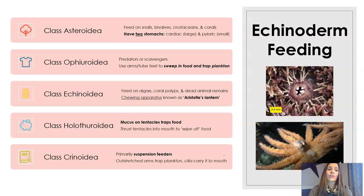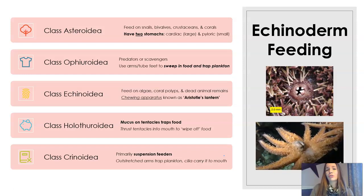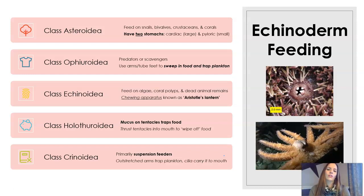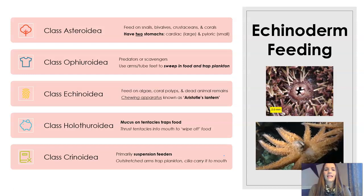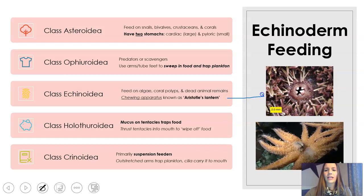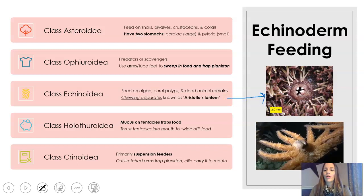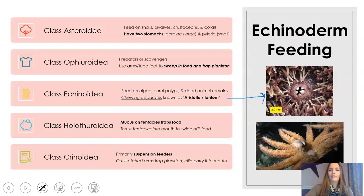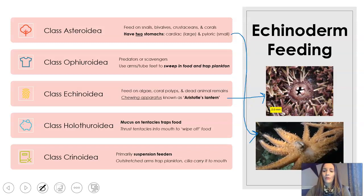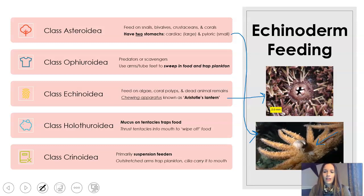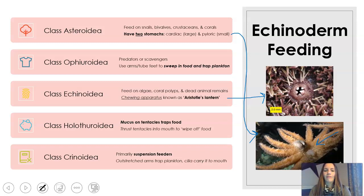The snake tails, or class Ophiuroidea, use their arms — they don't crawl like sea stars but use those arms to sweep food into their mouth and trap plankton. Echinoidea feed on algae, coral polyps, and dead animal matter, and they have something called Aristotle's lantern. There's also an example here of the cardiac stomach coming out — that white structure is the cardiac stomach, and it's actually eating a bivalve.